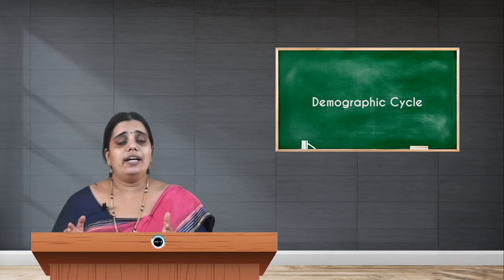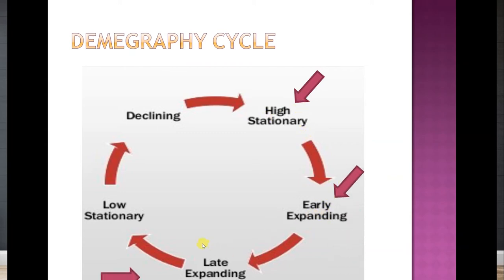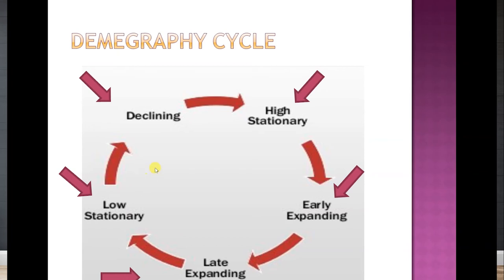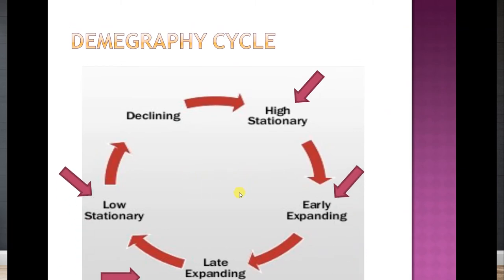Now let's see what the demographic cycle actually is. It is a cycle which contains five important stages. These stages are: high stationary, early expanding, late expanding, low stationary, and declining. These five are the important phases in any demographic cycle.